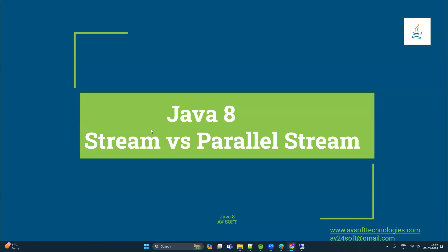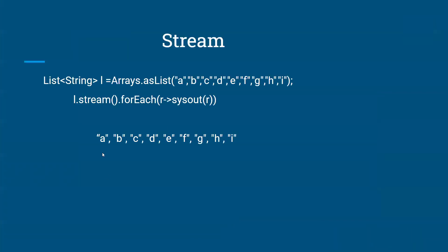Welcome to this tutorial. Today we are going to see the difference between stream and parallel stream. Basically, we can use the stream object to process collection elements. Here I have created a stream from a list, which stores elements like alphabets A, B, C, D, E, F, G, H, I. Using the list's dot-stream method, I can convert that collection into a stream, and on that stream I can perform various operations like mapping, filtering, sorting, and so on. Here I am using a forEach loop to print each element. The stream will perform the operation sequentially, meaning it will print every element in sequence — A, B, C, D, E, F, G, H, I in that order.